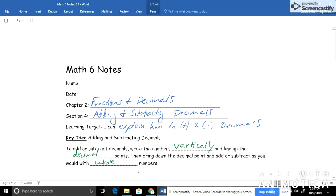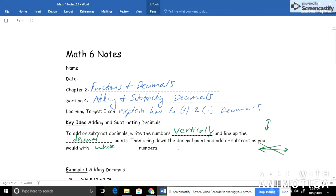So lining them up vertically, remember vertical means up and down. The word for sideways is horizontally, but we're going to line them up vertically with the decimal points. So let's see what that looks like in a problem.